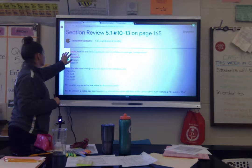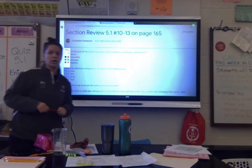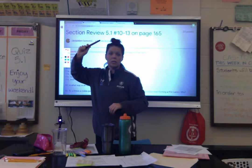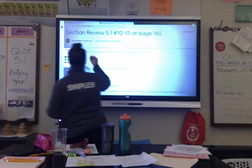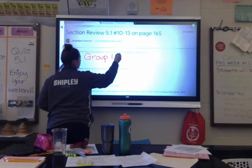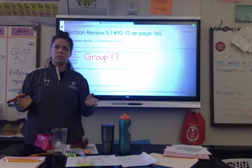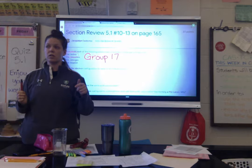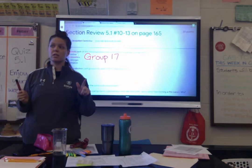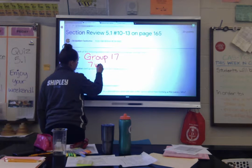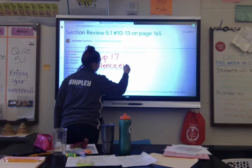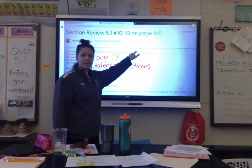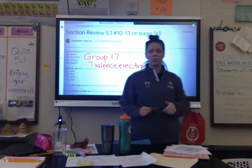Iodine — where is it on the periodic table? It is element number 53. What group is that? Group 17. So iodine is in group 17. It's a halogen, not a noble gas. How many valence electrons does it have if it's in group 17? Seven — seven valence electrons. So what does iodine need to do to achieve noble gas configuration?